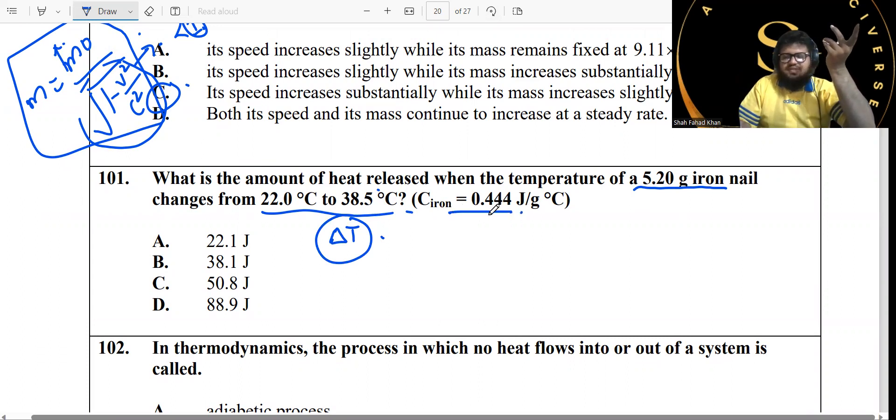We've got the specific heat capacity. All you need to do is just find out the heat. Q is equal to mc delta t. So m is 5.2, c is 4.44, and delta t is whatever you calculate, but it just gets the answer out of it.